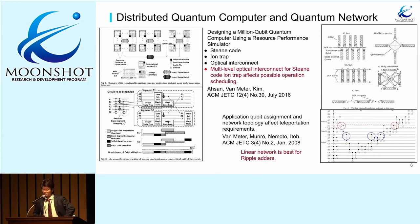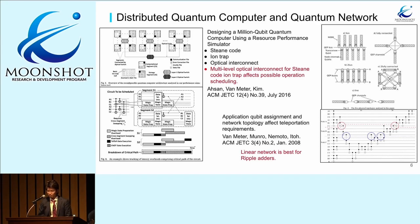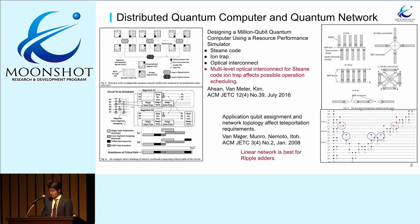This slide covers distributed quantum computers and quantum networks. There are many researchers in distributed computation and networks. I'll talk about two: the first involves ion trap chips with optical interconnects and two layers of interconnects, realizing multi-level optical interconnects for surface code — ion trap affects possible operation scheduling, so quantum network topology and system affects distributed computation. The second is the linear network topology, where a linear network is best for ripple adder architectures. They investigated five topologies and found linear is optimal.